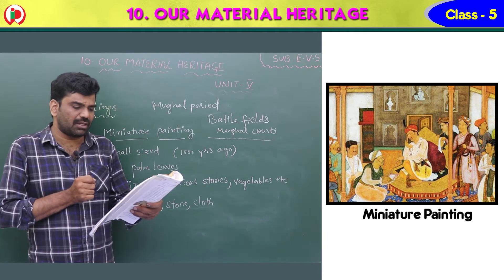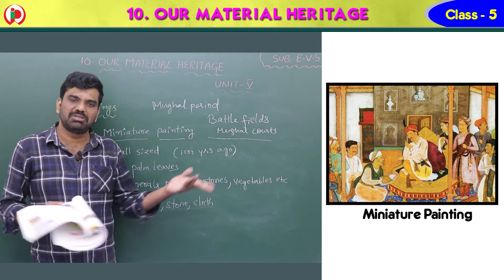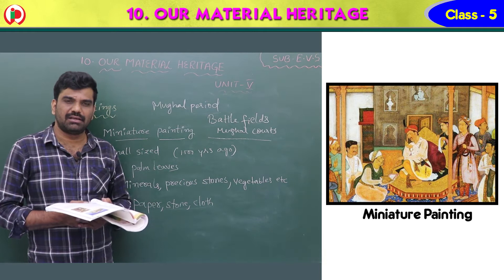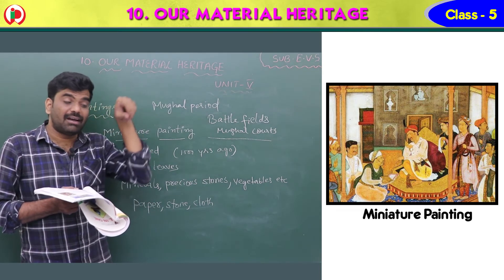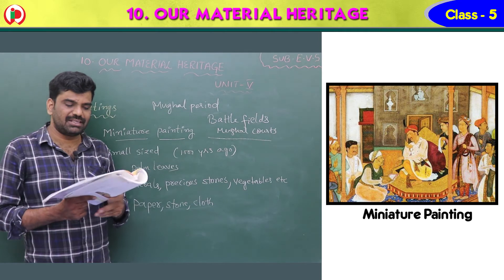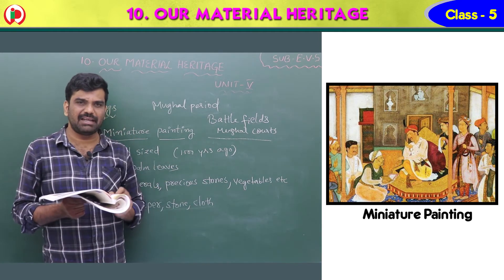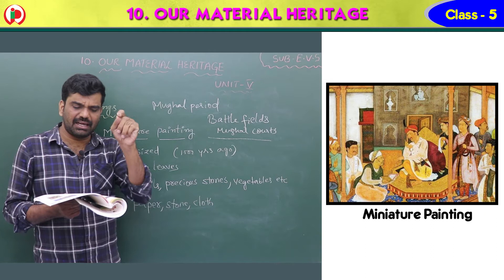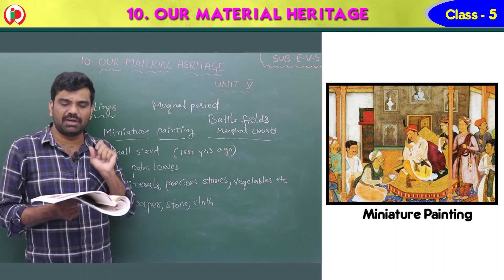A large number of artists used to work together on a single painting — see how great that was! On a single painting, so many artists worked. This is called miniature painting: 'mini' means small size. These were made in India about 1000 years ago on palm leaves.